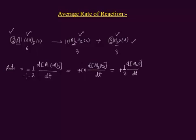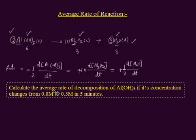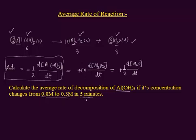Let me take one example in which I will calculate the average rate of decomposition of Aluminum hydroxide — the reactant — when its concentration changes at a particular time. It states: calculate the average rate of decomposition of Aluminum hydroxide. The average rate expression we have written here has coefficient minus one upon two. D[Al(OH)₃] represents the change in the concentration of reactant, and this is the change taking place in the concentration.